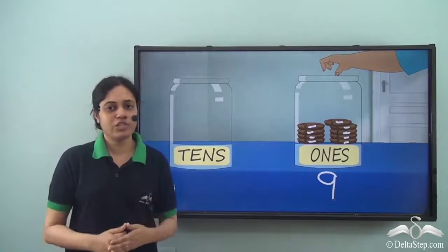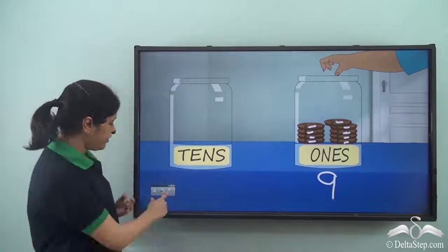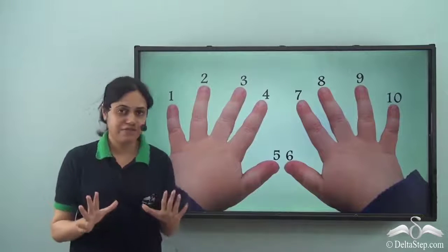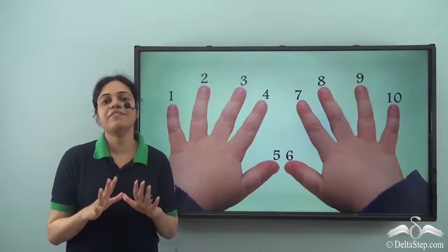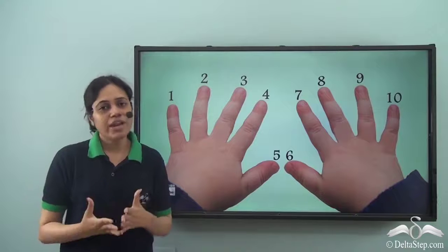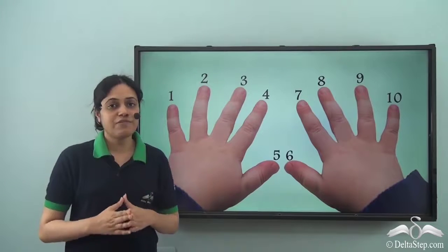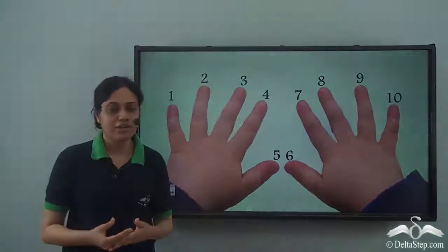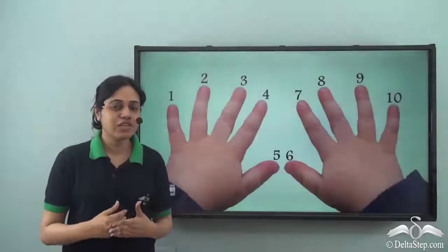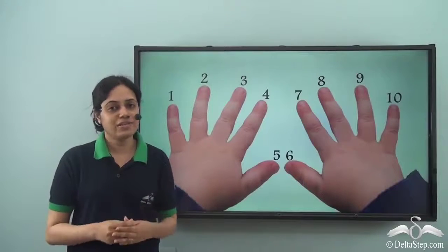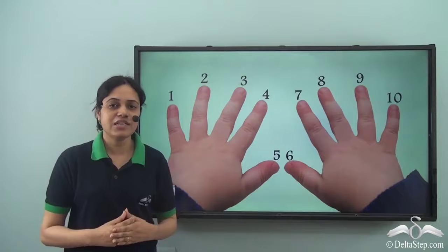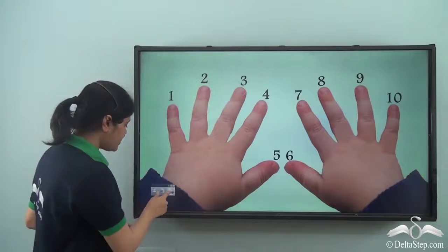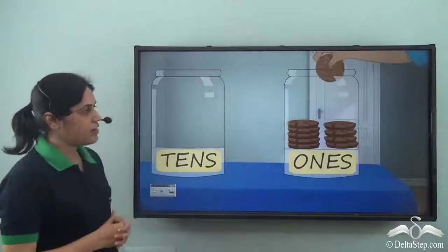Now let me ask you a question. How many fingers do you have? You have ten fingers, right? All of us have ten fingers. So why did God choose to give us ten fingers? Why not nine? Why not eleven? Is there something special with the number ten? Well there is. Number ten is a very special number. Let us see what this special number does for Abir's jar.